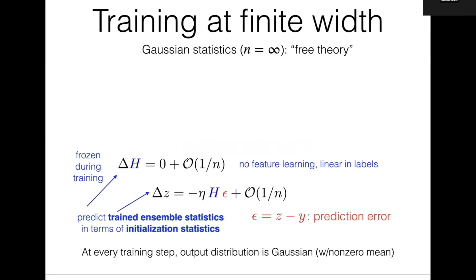At infinite width, the physics analog of this system is like a free theory — you're doing a bunch of Gaussian integrals, and those are easy. At every step of gradient descent, you simply multiply your prediction error by a matrix that is frozen and does not change over training. That's exactly what lets you predict where you end up from where you started. If you take a Gaussian distribution and transform it linearly, you get another Gaussian with a different variance and mean. The fact that you get a different mean is why you're actually learning something — you start at mean zero and end up at a mean hopefully close to the answer.